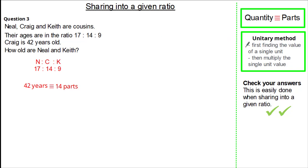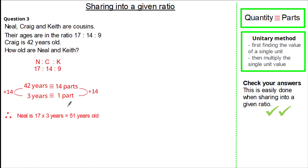Using the unitary method, we divide by 14 to give us 1 part, so 1 part is equivalent to 3 years. Neil has 17 parts, so 17 multiplied by 3 means Neil is 51 years old. Keith has 9 parts, so 9 times 3 means he's 27 years old.